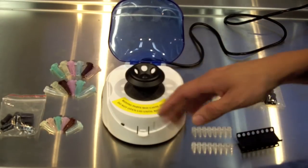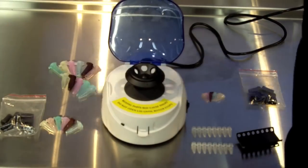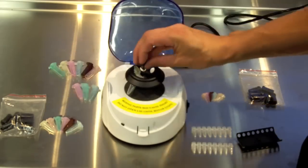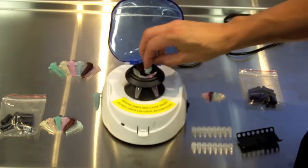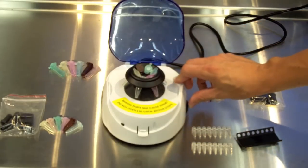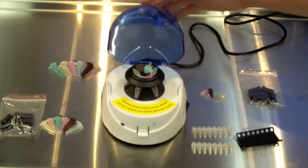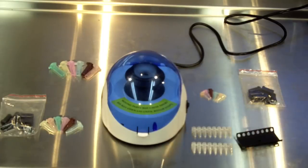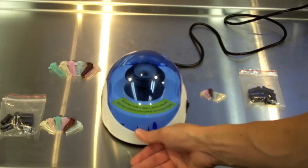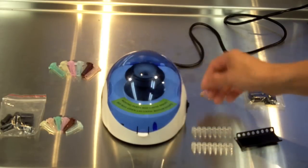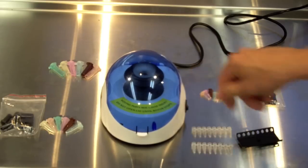Operation of the centrifuge is very easy. You simply load up your samples. There is an on-off switch on the side of the unit, as well as a switch on the lid. So, when you open the lid, the centrifuge will stop. Or you can use the power button on the side.